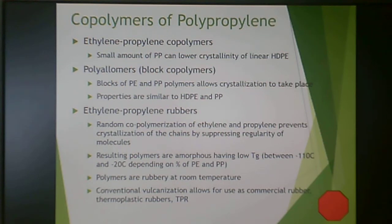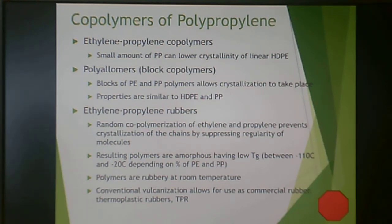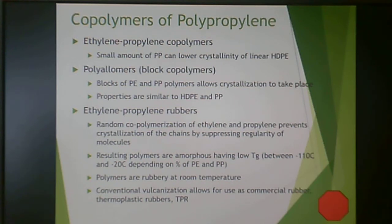You can also make ethylene-propylene rubbers. The crystallinity in ethylene or propylene is what causes them not to be rubbery at room temperature. If you randomly copolymerize ethylene and propylene, this prevents crystallization but still gives you low-temperature properties, so it actually is rubbery at room temperature. These have a low Tg — anywhere between negative 110 and negative 20°C — depending on the ratios.